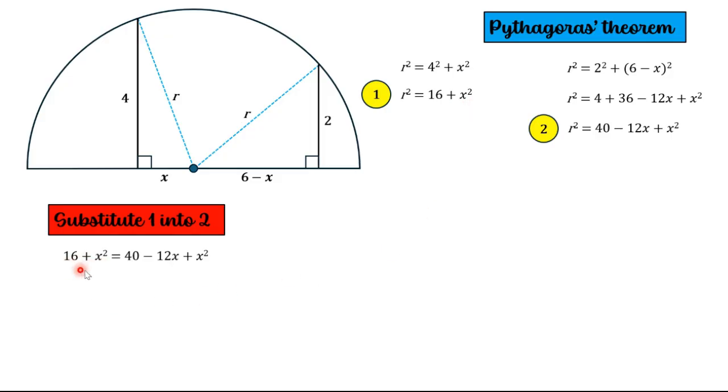And now let's simplify this equation by subtracting 16 and subtracting x squared from both sides. So 16 minus 16 is nothing, x squared minus x squared is nothing, 40 minus 16 is 24, and x squared minus x squared is nothing. So we're left with 0 equals 24 minus 12x. We can then solve for x by adding 12x to both sides. Then we can divide both sides by 12 and have a value of x equals 2.